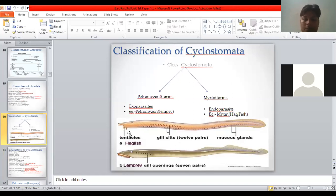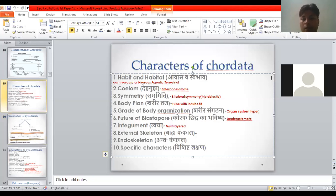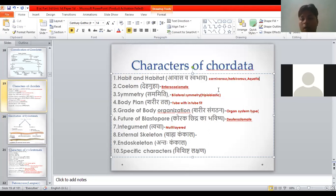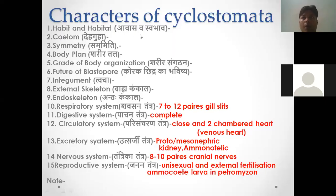The jaws are absent. Now I will talk about the basic characters — habit and habitat. These animals are aquatic animals. They show migration; they go to fresh water for reproduction, where they lay eggs together. After laying eggs, they die. The larvae hatch and live in fresh water for a long time, then are converted into adults and come back into marine water.